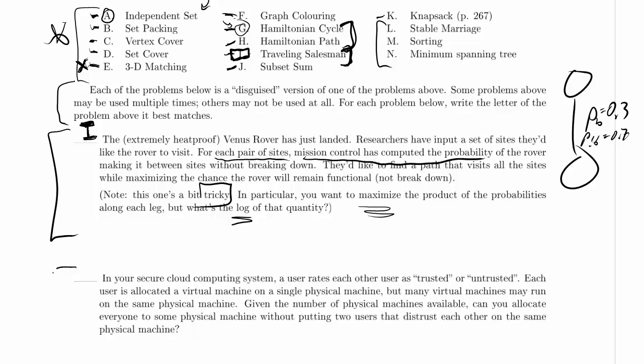We're working now on part two of the first problem, problem two, of the practice exam. In your secure cloud computing system, a user rates each other user as trusted or untrusted.